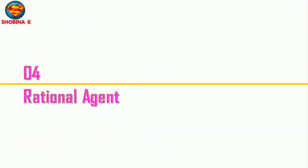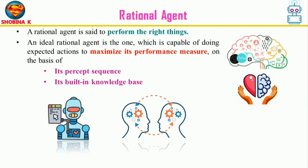A rational agent is one that can take the right decision in every situation. A rational agent always aims to perform optimal actions based on given premises and information. It can be a person, firm, machine, or software. The concept of rational agent appears in disciplines such as artificial intelligence, cognitive science, decision theory, economics, ethics, game theory, and the study of practical reason. AI has borrowed the term from economics to describe autonomous programs capable of goal-directed behavior, and today there is considerable overlap between AI research, game theory, and decision theory.